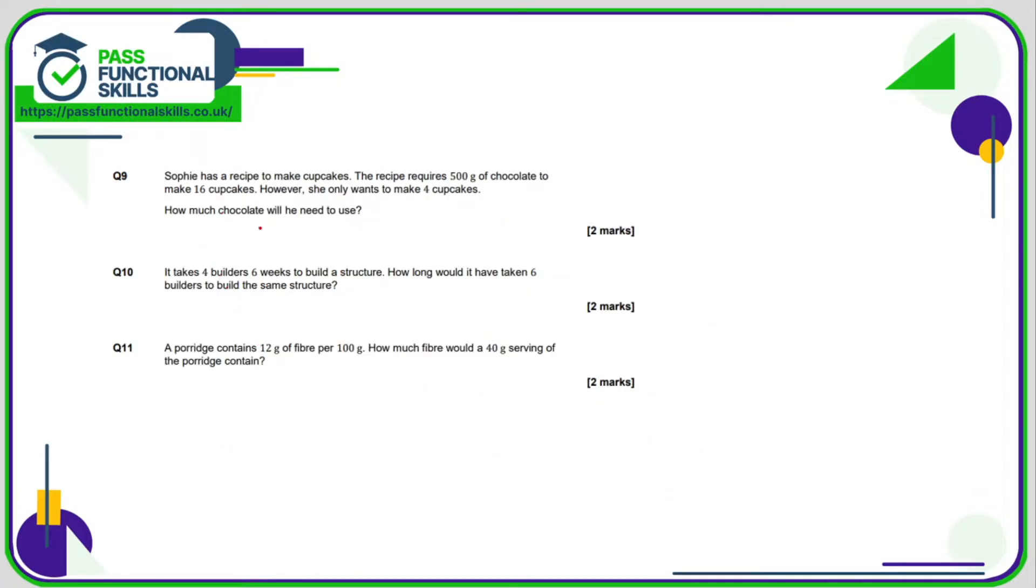Question number nine. Sophie's got a recipe to make cupcakes. 16 cupcakes requires 500 grams of chocolate. She only wants to make four cupcakes, which is four times less, so therefore she'll need four times less sugar. 500 divided by four is 500 halved twice, so 250, 125 grams.